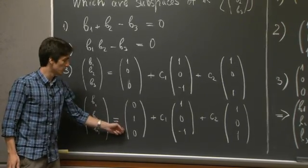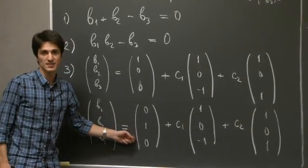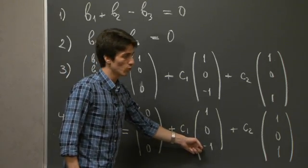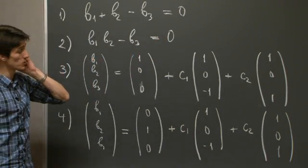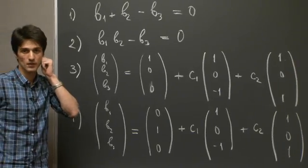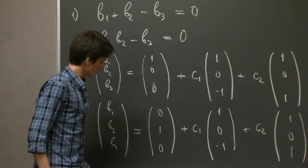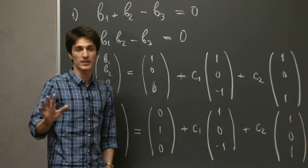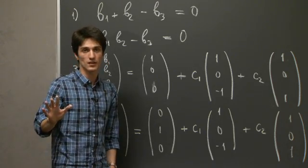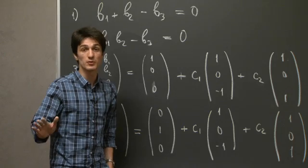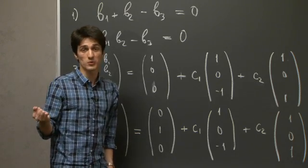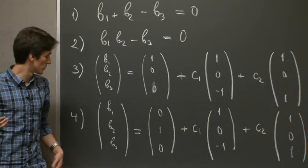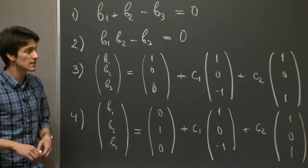Now, (0, 1, 0) is not in the span of these two vectors. So the argument that we just showed for 3 doesn't work. But what we know about vector subspaces is the following thing. It follows almost from the axioms that 0 needs to be inside the subset in order for it to be a subspace. It's a necessary condition.